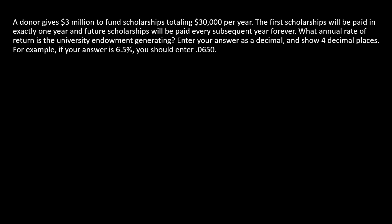Let's take a look at the cash flows involved in this case. We've got a $3 million gift — that's happening right now. That's a cash flow today, and so we're going to think of that as a present value, PV.